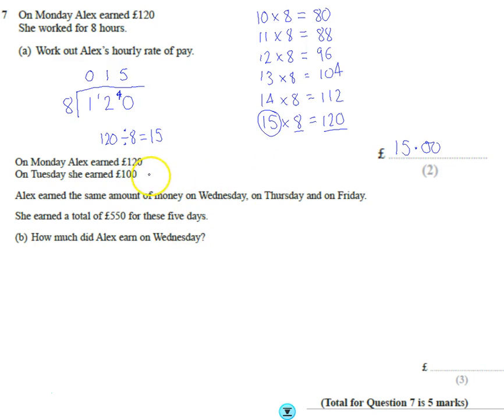Okay, second part. It asks us, it says she earns £120 on Monday, she earns £100 on Tuesday, and she earns the same amount on Wednesday, Thursday, Friday, so those three days are the same as each other, and she earns £550 overall.